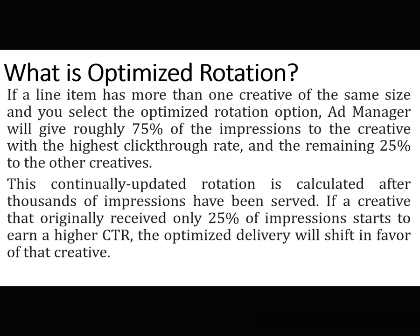If a creative that originally received only 25% of impressions starts to earn a higher CTR, the optimized delivery will shift in favor of that creative. For example, if you have 3 creatives in 1 line item and 1 creative is giving the highest CTR, then 75% of total impressions — say, for 1 lakh impressions, around 75,000 impressions — will be served on that creative, and the rest 25% on the other creatives. This keeps updating after every thousand impressions, and Google Ad Manager automatically determines how the optimization of creative rotation and impression distribution is done.